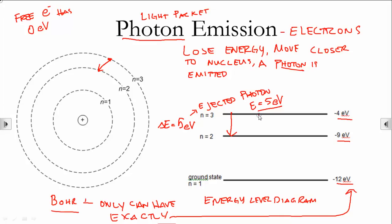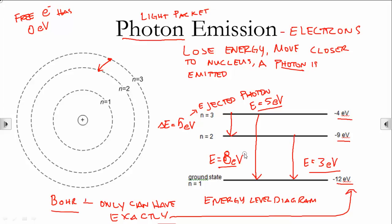Another transition that can occur is moving from the n equals 3 state all the way down into the n equals 1 state — in that case, the photon energy is going to be 8 electron volts. And if we only fall between n equals 2 and n equals 1, the ejected photon has an energy of 3 electron volts. These are the only possible transitions in this atom, so these 3 photons — 5 electron volts, 8 electron volts, and 3 electron volts — are the only light that will ever come out of this atom.